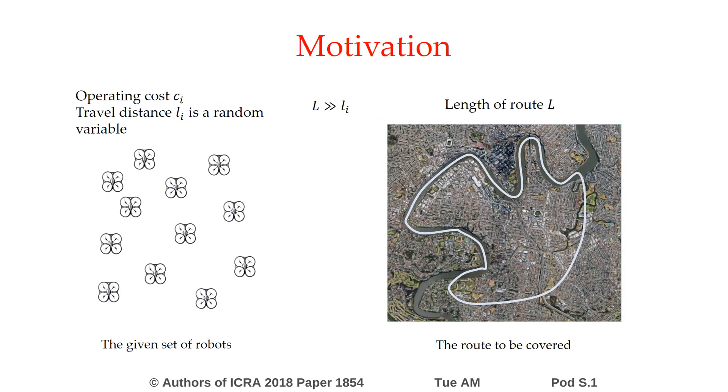We are motivated by a multi-robot team selection problem, where a set of robots with operating cost and limited travel distance due to limited battery life have to cover a given route. The travel distance for robots are random variables influenced by uncertain environmental variables like wind speed. The length of the route is much longer than the distance an individual robot can travel.